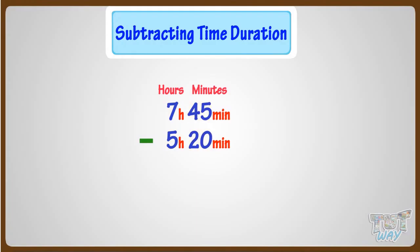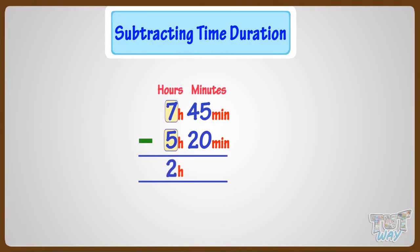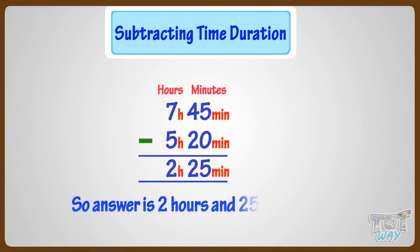Subtracting hours, that is subtracting 5 hours from 7, we are left with 2 hours. Now subtract minutes from minutes: subtracting 20 from 45 minutes, we are left with 25 minutes. So our answer is 2 hours 25 minutes.